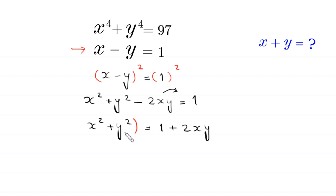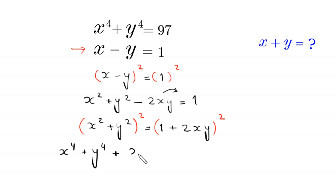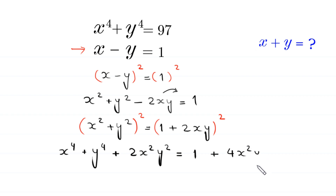From here, we take the square of both sides again. This x squared plus y squared whole squared will become x to the power 4 plus y to the power 4 plus 2x squared y squared, is equal to 1 plus 2xy whole squared, which becomes 1 plus 4x squared y squared plus 4xy.